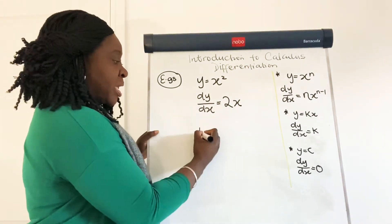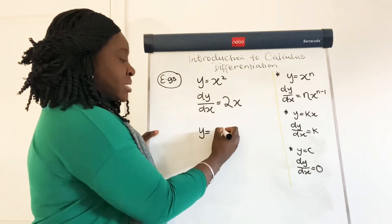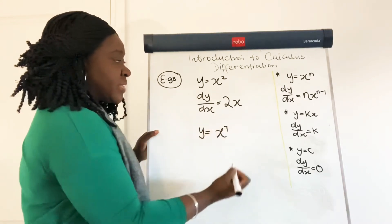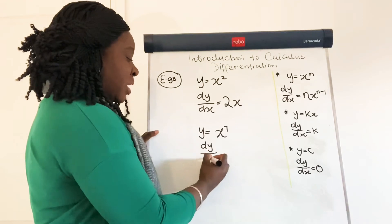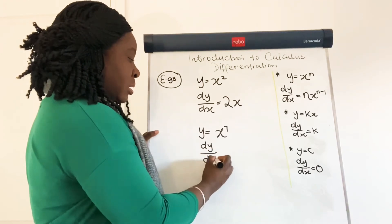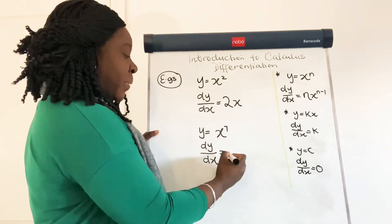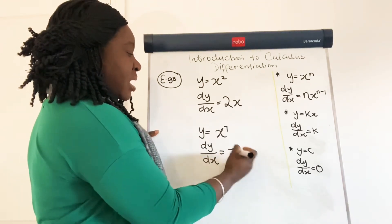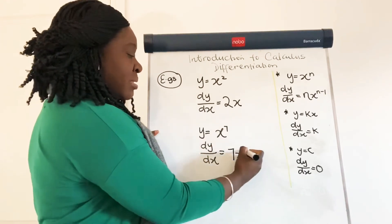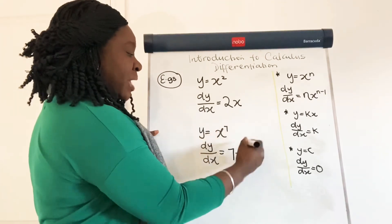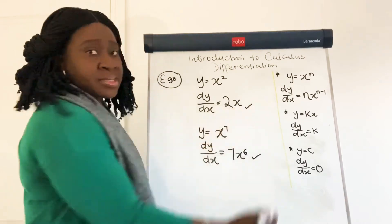Another example: if we have y is equal to x to the power of 7, then dy by dx would be equal to — if we multiply it by the power, then 7x. And if we reduce the power by 1, then that would be 7 minus 1, which is equal to 6, giving 7x to the power of 6.